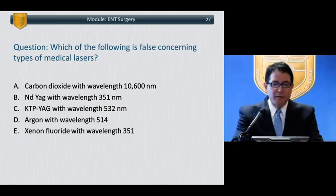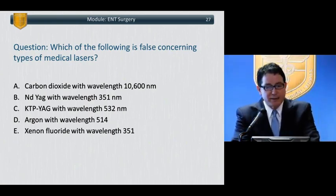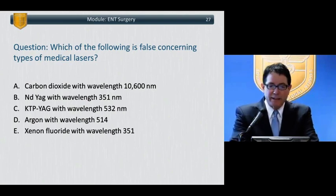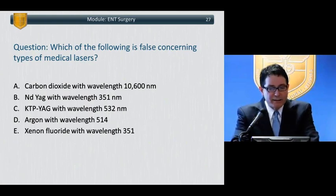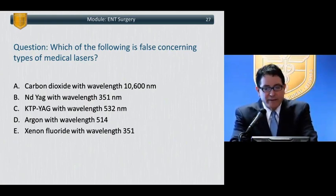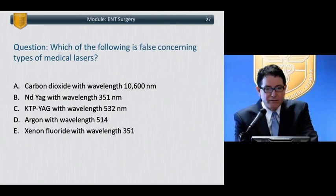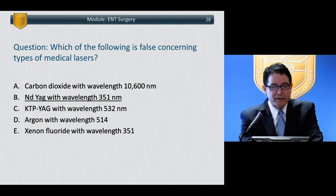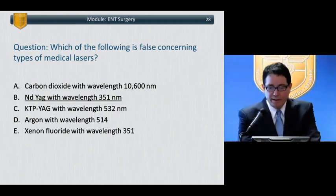Which of the following is false concerning types of medical lasers? A: Carbon dioxide with wavelength of 10,600. B: Nd:YAG with wavelength of 351. C: KTP-YAG with wavelength 532. D: Argon with wavelength 514. E: Xenon fluoride with wavelength of 351. The correct answer is B — Nd:YAG with wavelength of 351 nanometers is false.